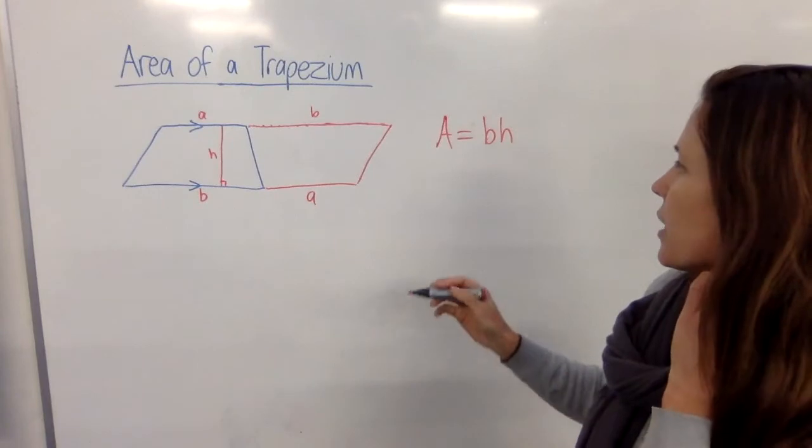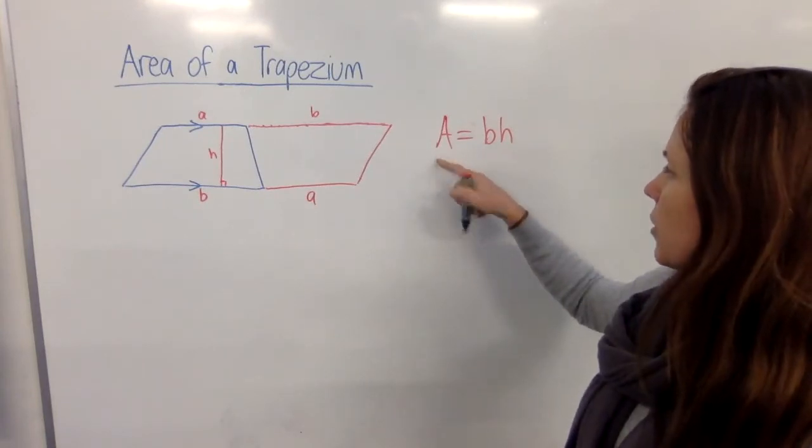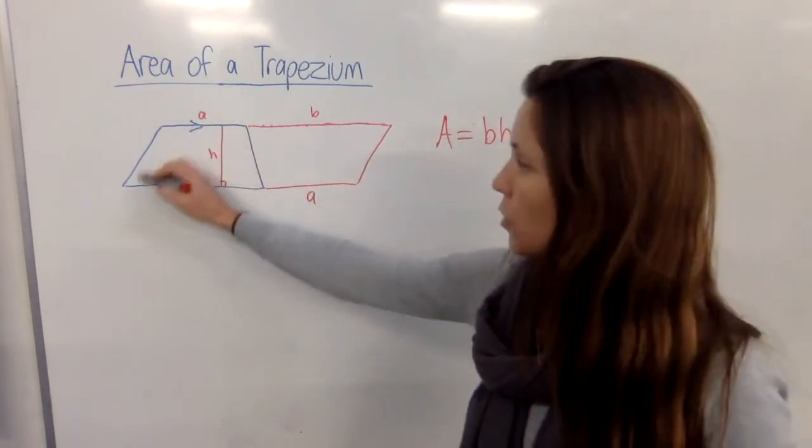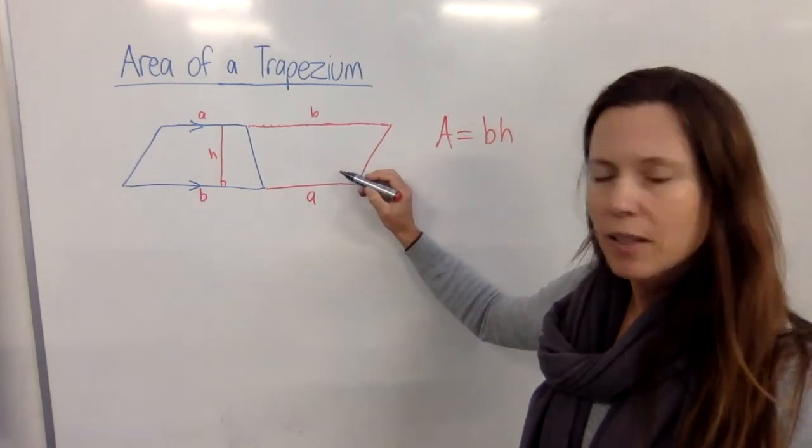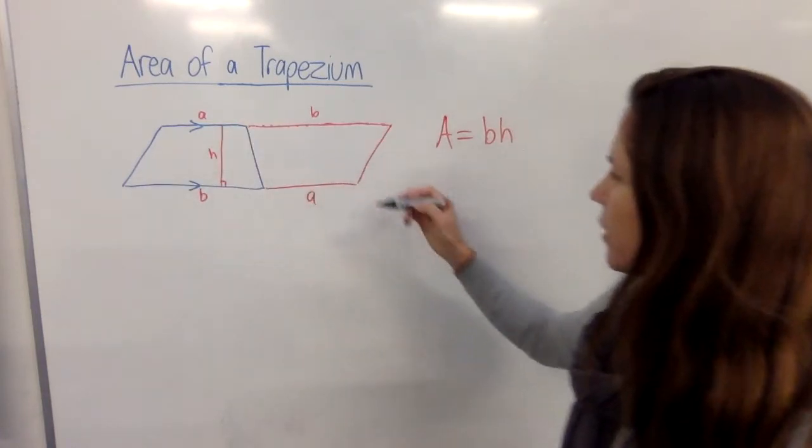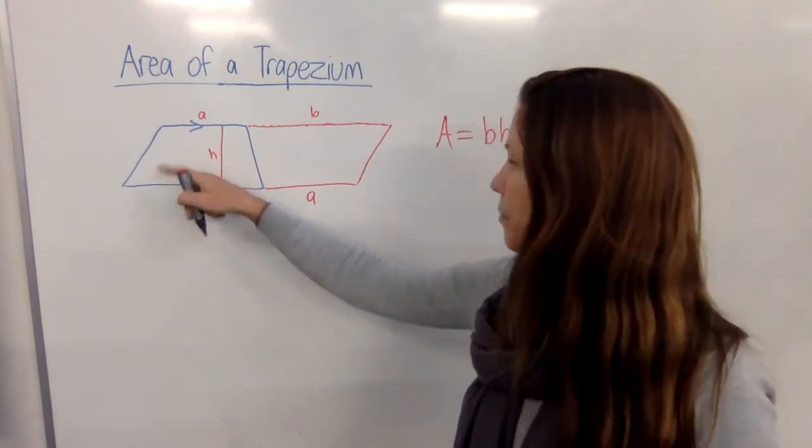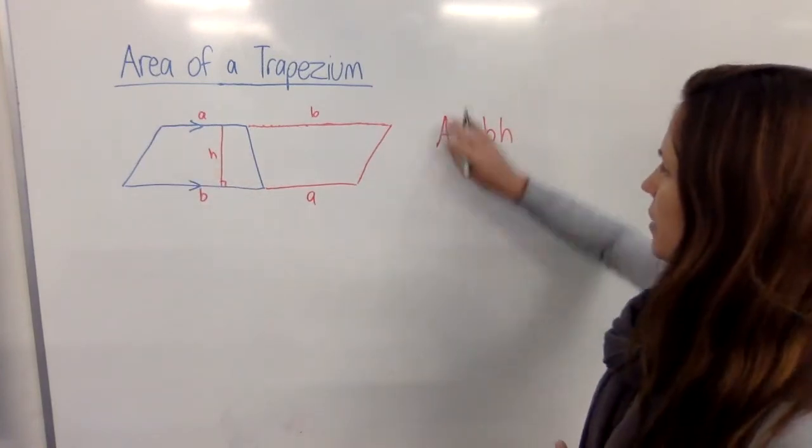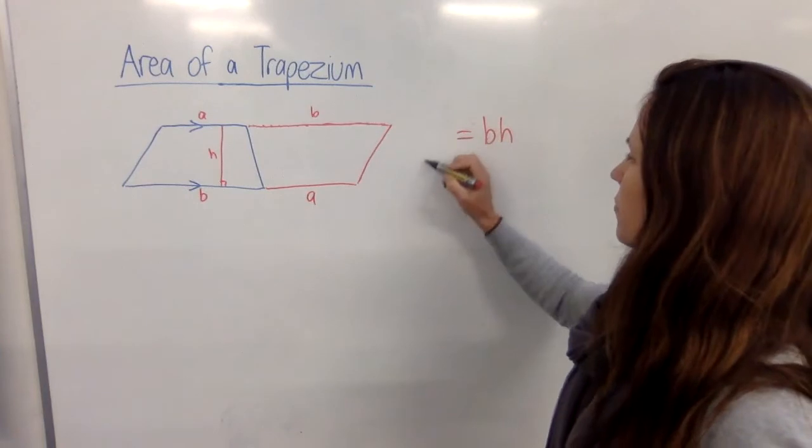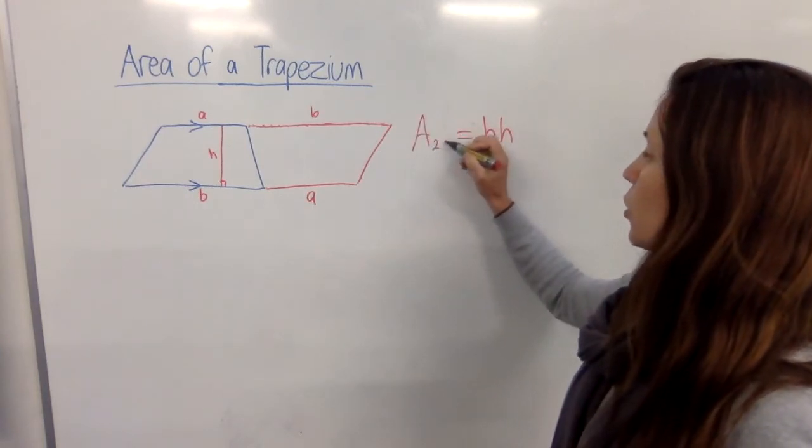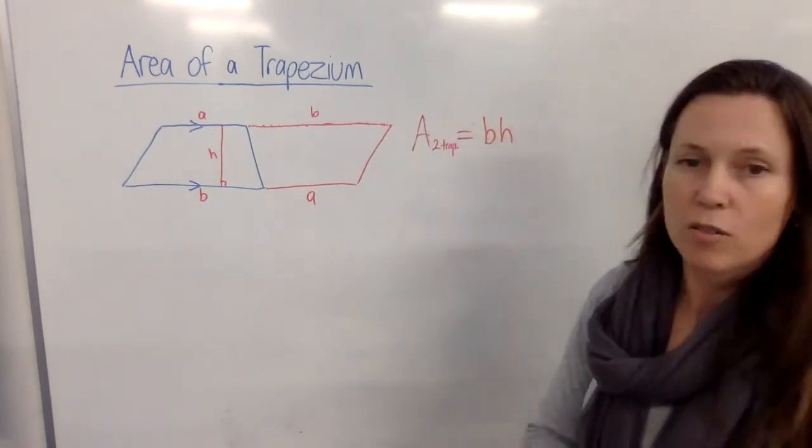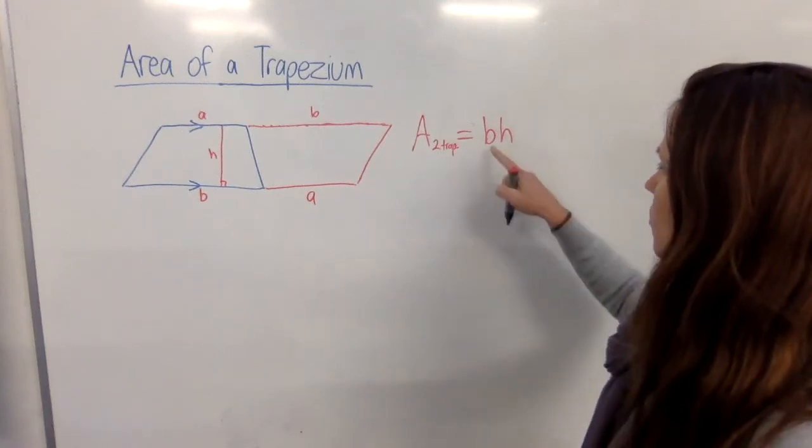then what I've actually found here is the area of two trapeziums, haven't I? Because my massive parallelogram is twice as big as the trapezium. It's made up of two of them. So what I'm saying here is the area, this is area of two trapeziums, let's just write two trac, is equal to base times height.